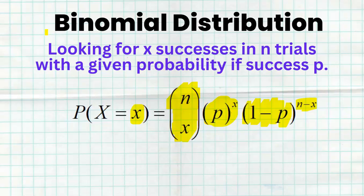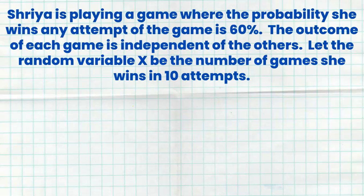That's the formula that's quite easy to use. But what I'm going to show you in this video is that you actually don't have to use that formula, but you do have to know how to show it. Here's the example we're going to look at: Shria is playing a game where the probability she wins any attempt is 60%. The outcome of each game is independent of the others — that's super important for binomial. Let the random variable x be the number of games she wins in 10 attempts.